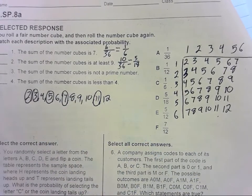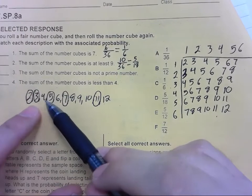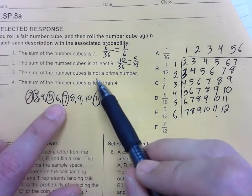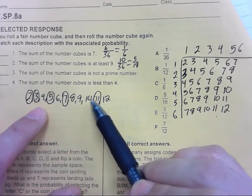So we want it to NOT be a prime number, so we want the sum to be 4, 6, 8, 9, 10, or 12. So how many 4s are there? 1, 2, 3. We have 3 fours.